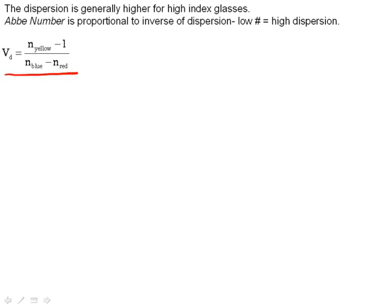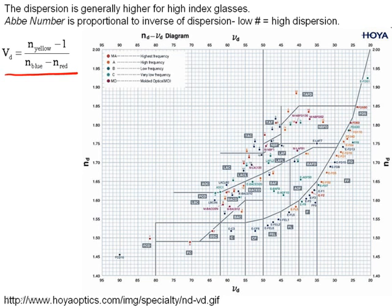And the way optical engineers use this information is when they're designing different types of lenses, really high-quality lenses, they can choose different glass types that have different Abbe numbers. And generally, we present the index of refraction as a function of Abbe number in a graph that looks something like this.